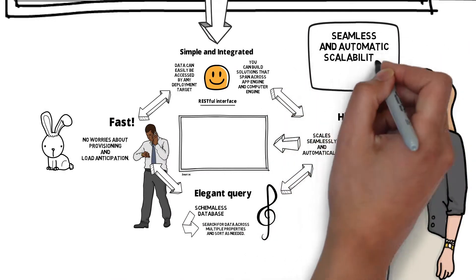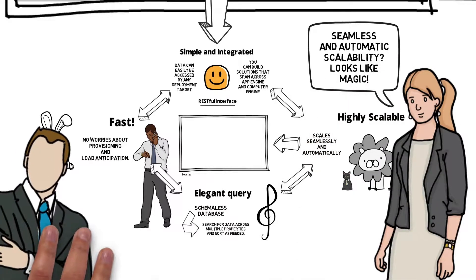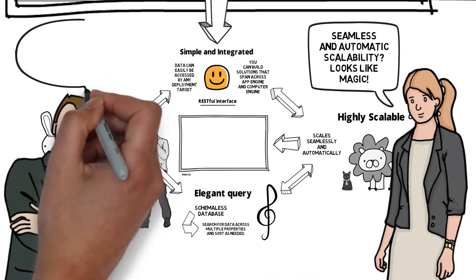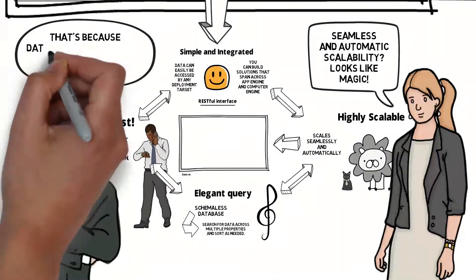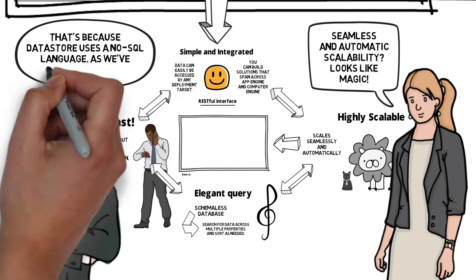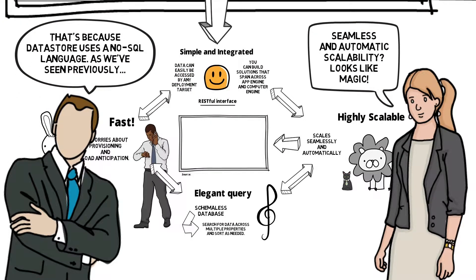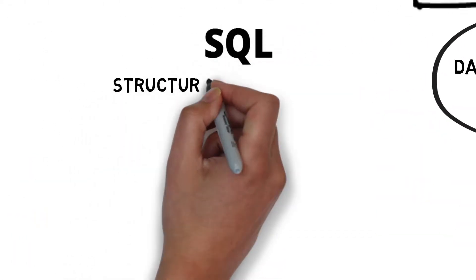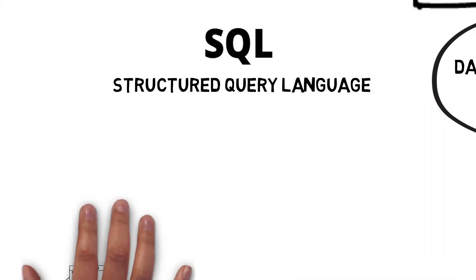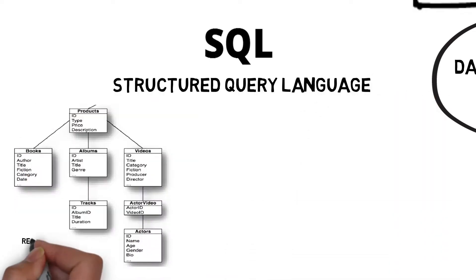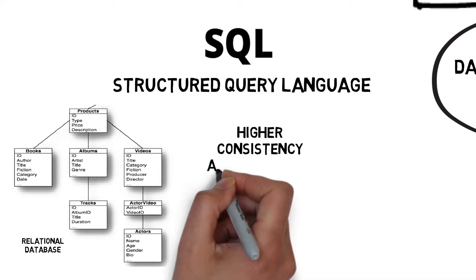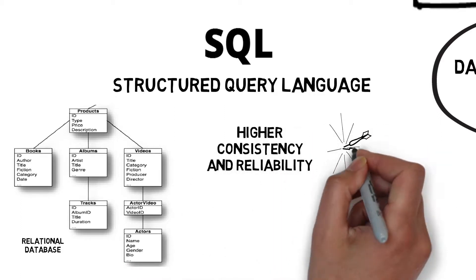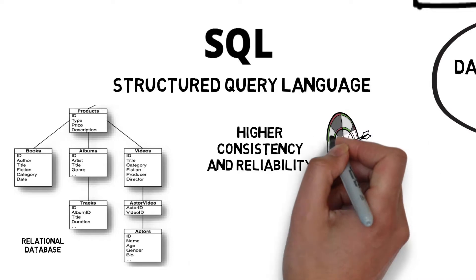Seamless and automatic scalability — it seems like magic. That's because Google Cloud Datastore uses a NoSQL language, as we previously saw in the DynamoDB video. When we look at a relational database, we use SQL — Structured Query Language — which is usually for traditional types of databases that offer higher consistency and reliability, optimal for very complex data sets.